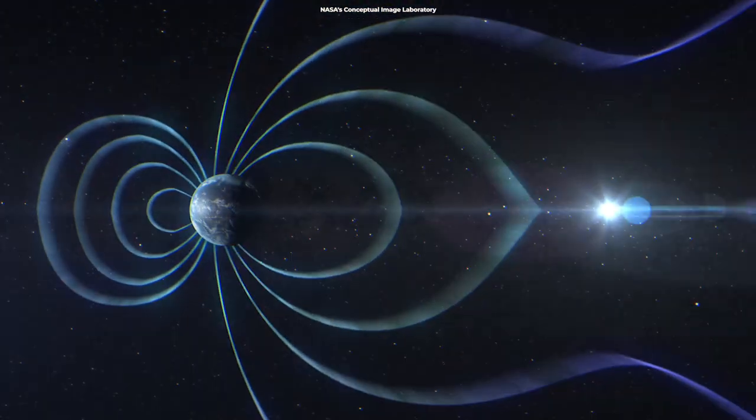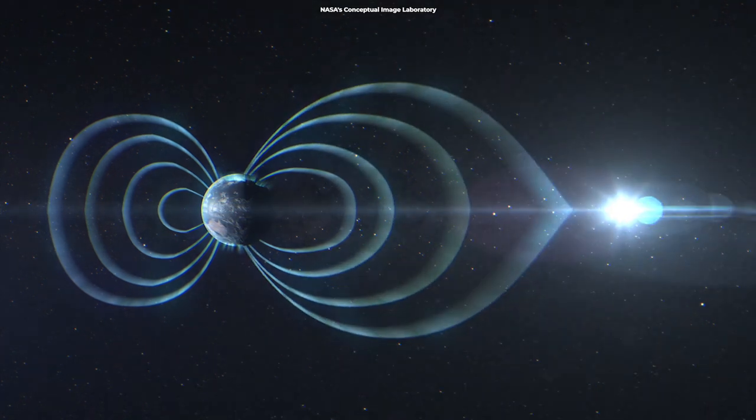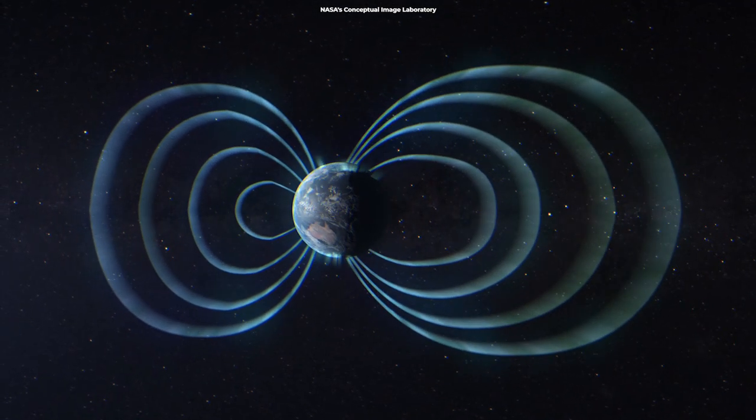Magnetic field reconnection events occur when opposing magnetic fields are forced together and become twisted around each other, thus expelling lots of energy. This is similar to the phenomenon that produces northern lights.